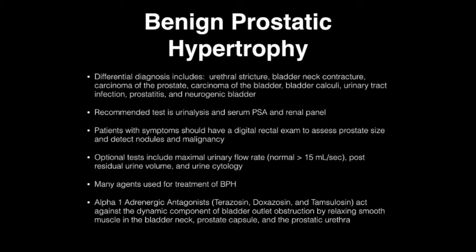Many agents are used in the treatment of BPH. These include alpha-1 antagonists such as terazosin, doxazosin, and tamsulosin, also known as Flomax. These agents work against the dynamic component of the bladder outlet obstruction by relaxing the smooth muscle of the urinary bladder neck, prostate capsule, and prostatic urethra.